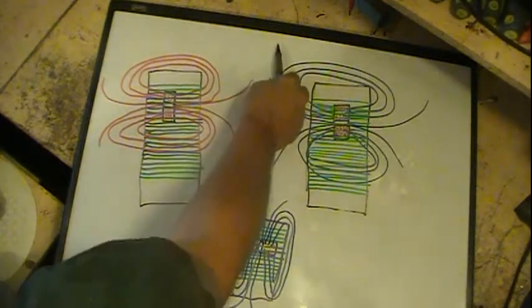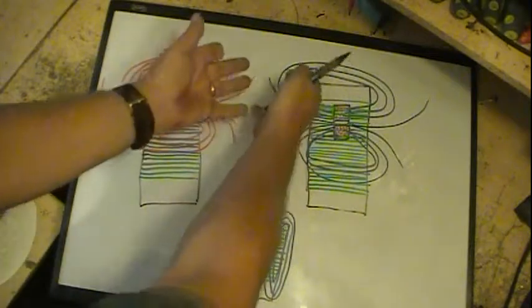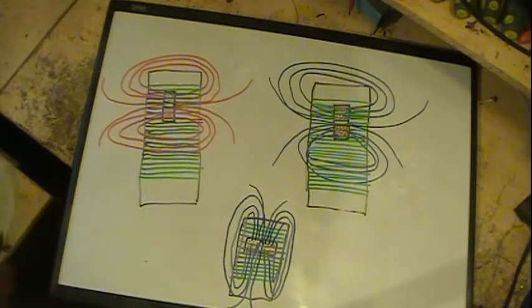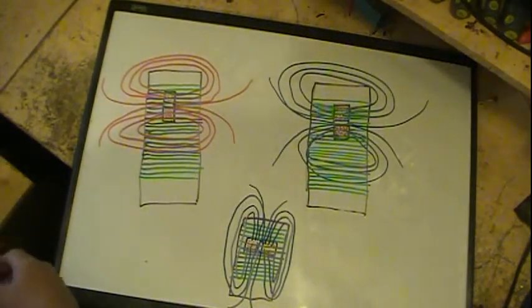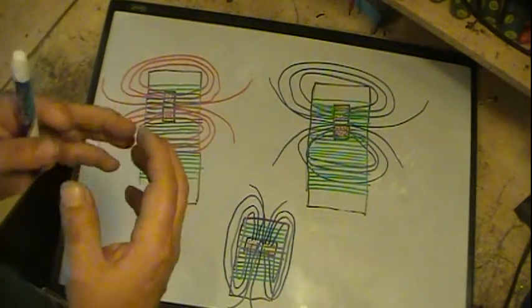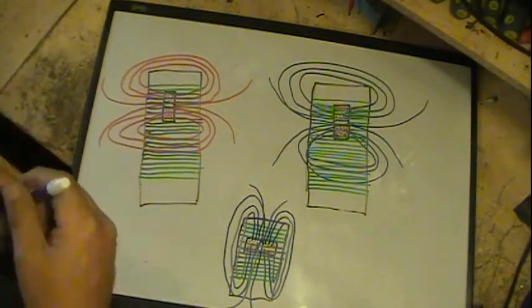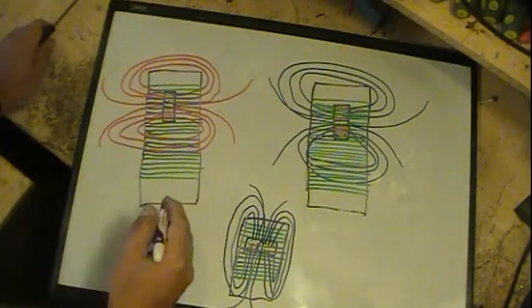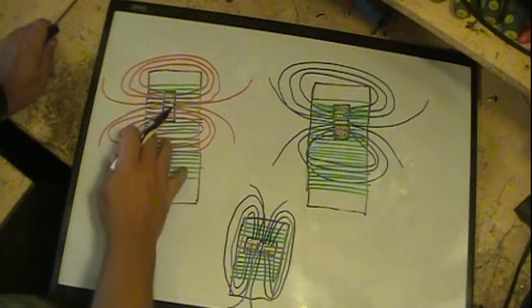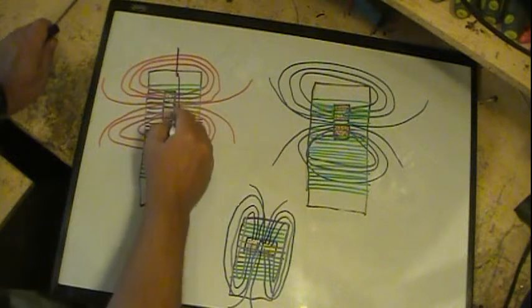The flux lines will get close and intermingle with each other, but nothing's transmitted that way. In order for a wire to get induced from a magnetic field, it has to cut across it. The strongest point would be right here, down through, just like this.